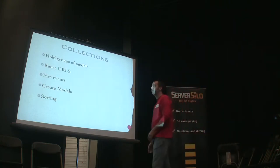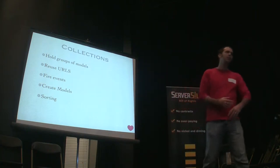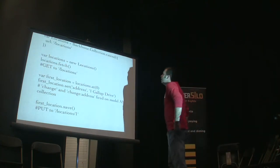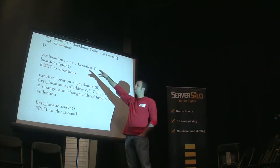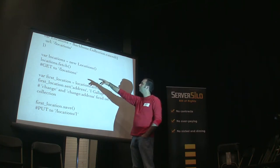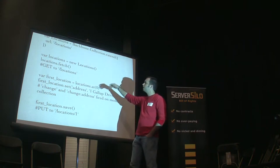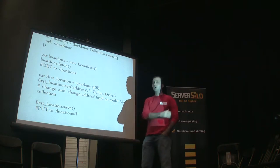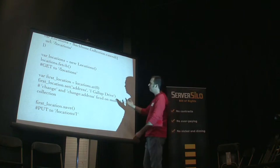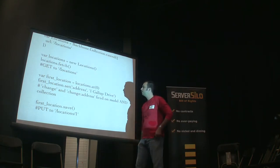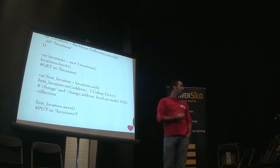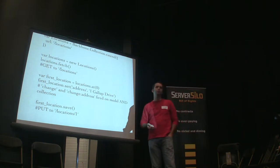Collections hold groups of models. They help you reuse URLs, they fire your events, they create your models — they've got lots of cool functionality. I'm going to create a new collection and tell it where to pull the models from using your standard REST methodology. So with a locations collection, I create it, call fetch, it does a GET to that location, gets all of them, and all my models are automatically instantiated and created. One of the great things about collections is any event that fires on a model in a collection will also fire on the collection.